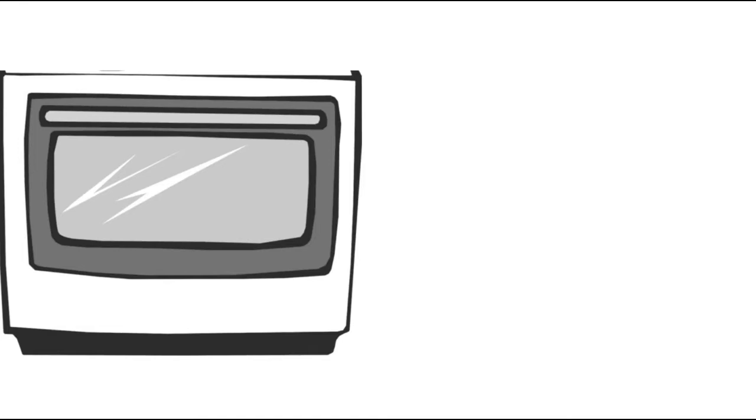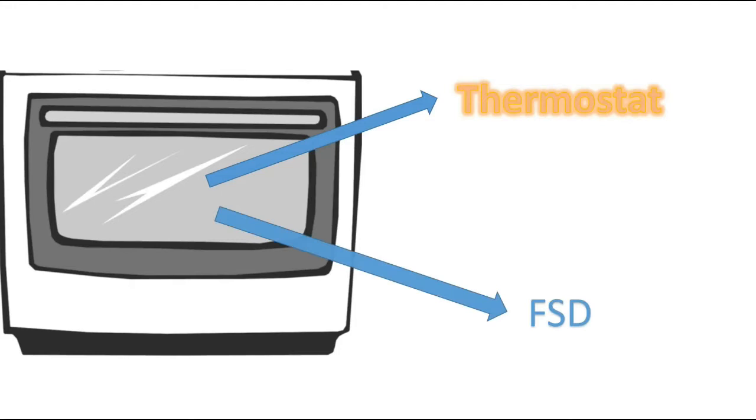Within an oven there are only two controls. The first one is a thermostat which controls the heat, and the second one is a flame supervision device.